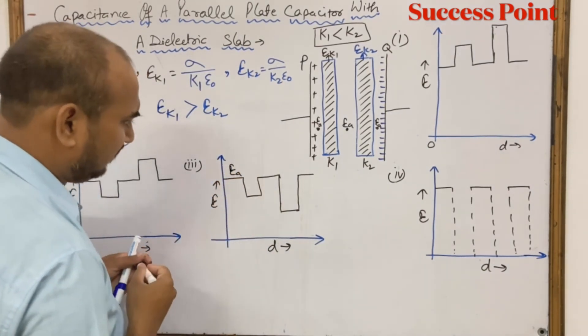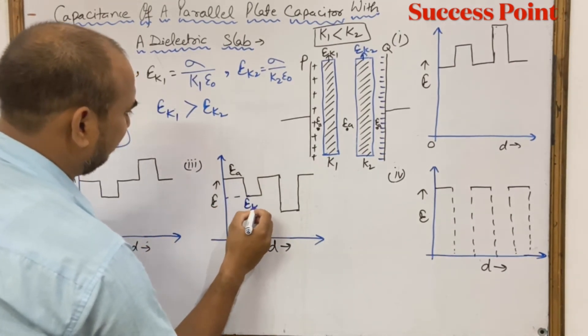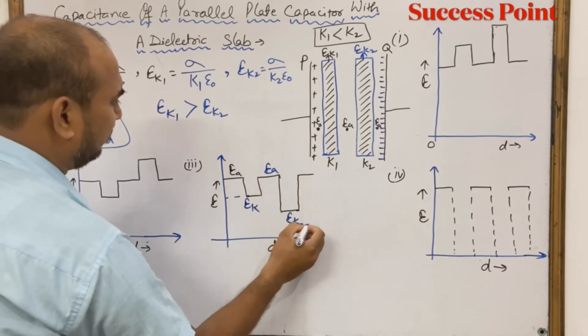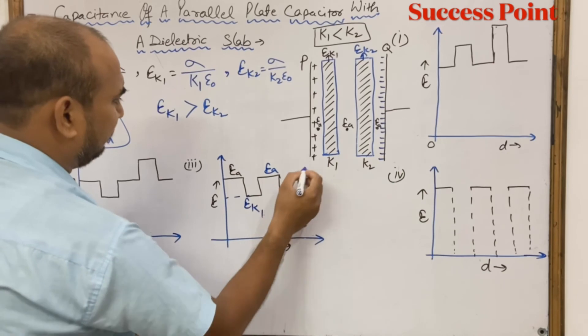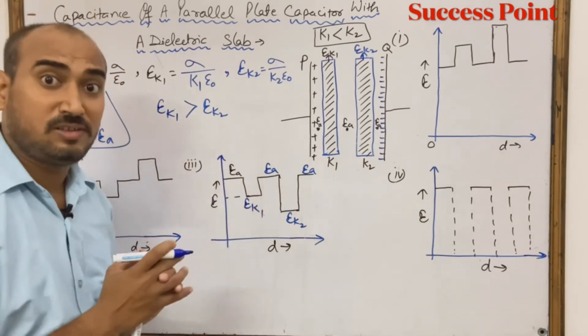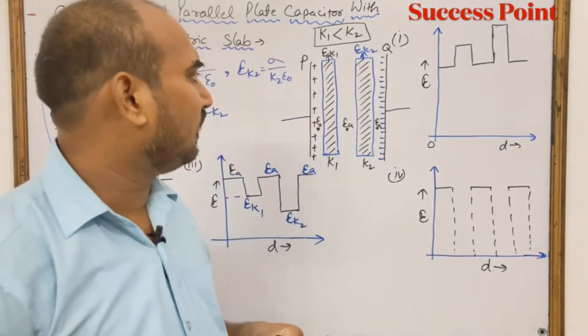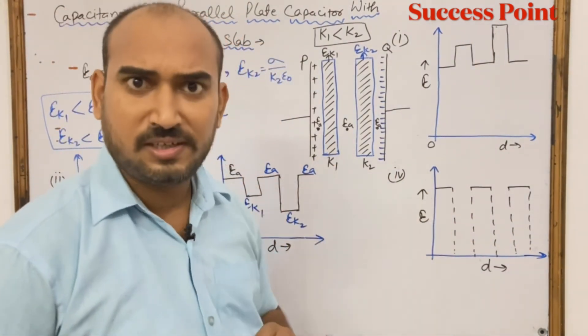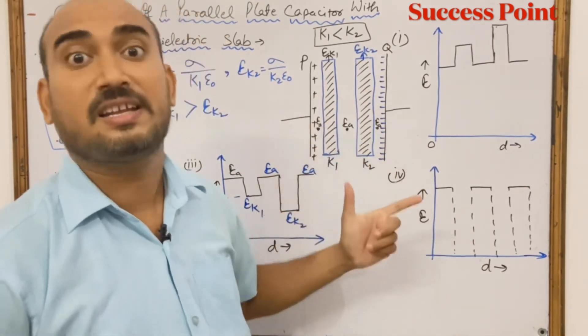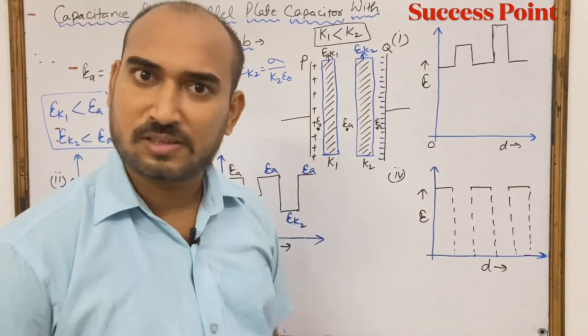The electric field here is EK1, then electric field here is EK2. This electric field graph is right because here the dielectric field is correct. This is right when these plates are metal, so the electric field shown here is correct.